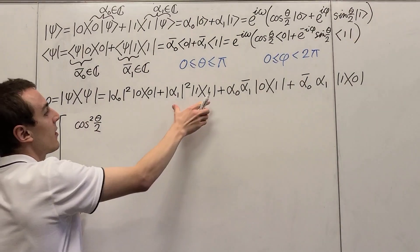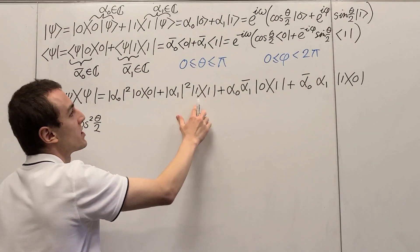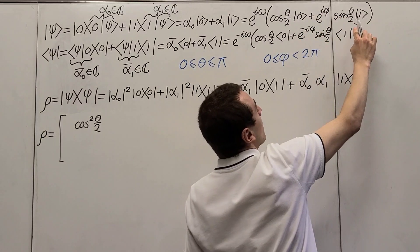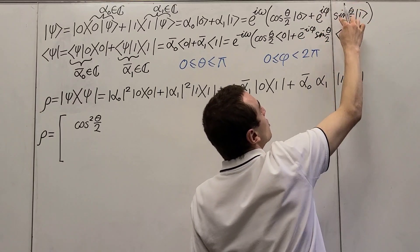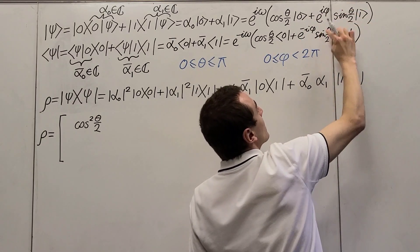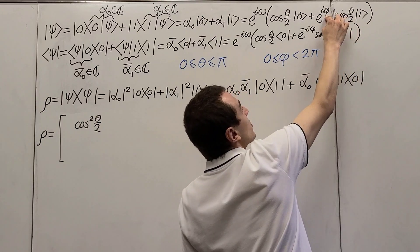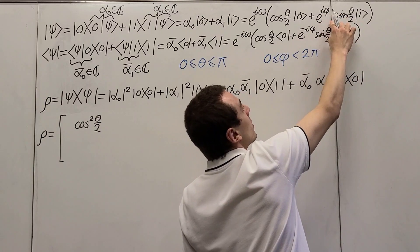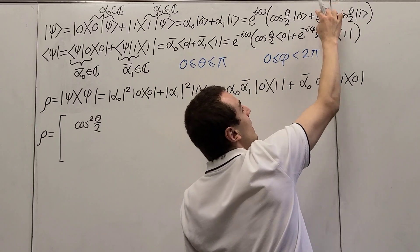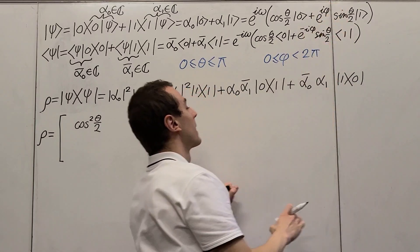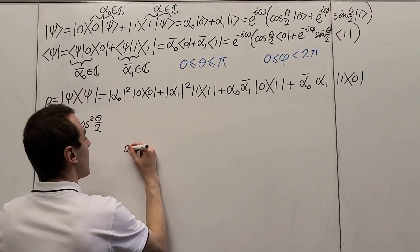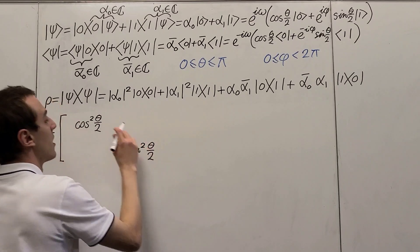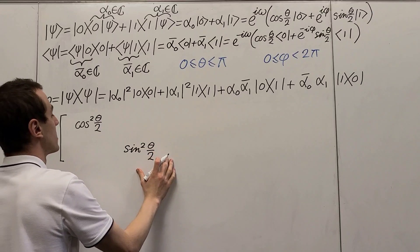Now let's look at the other diagonal element, the one-one term. That comes from multiplying the two corresponding terms, giving us sine squared because there are two copies of sine. The relative phase term also cancels out because we have a plus i and then a minus i. So we get sine squared of theta on two. Those are the two diagonal terms.